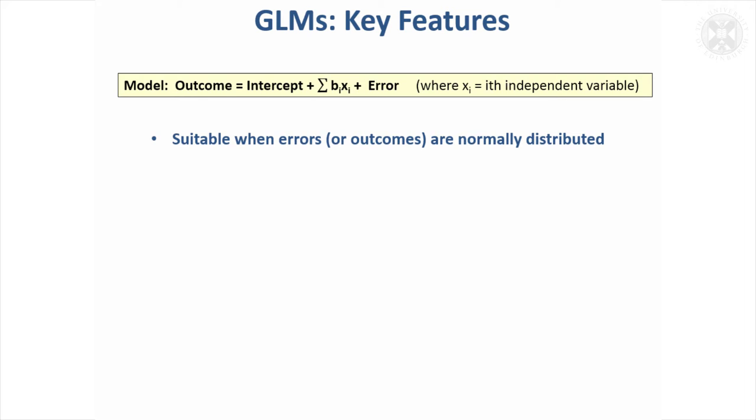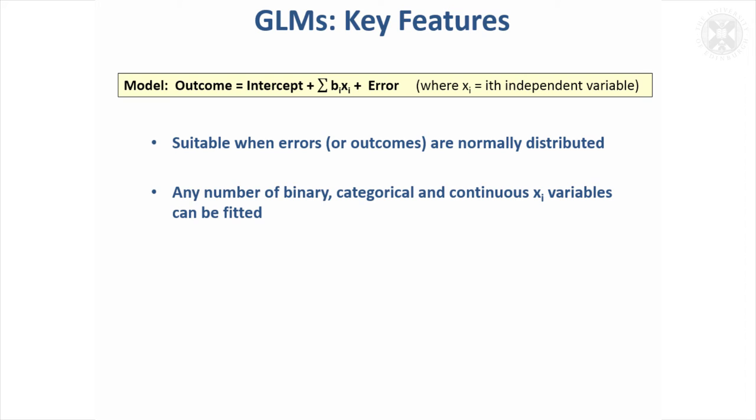So the key features of general linear models. I hadn't specifically mentioned this today but I did mention it last time that you do assume that the errors are normally distributed when you're doing an analysis of variance and also regression, and the same is the case for the general linear model. If the outcomes themselves, these measurements, are normally distributed you'll be okay, but the assumption is actually that the errors are normally distributed and they're the things that ideally should be checked.